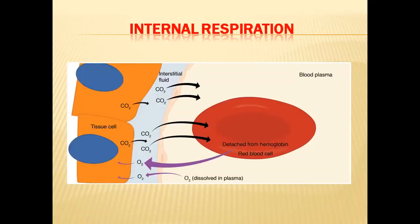In internal respiration, blood returns from the lungs full of oxygen and reaches the tissues. When it reaches the tissues, it gives oxygen to the tissues and receives carbon dioxide. By taking carbon dioxide, the blood returns back and finally reaches the lungs again. This process is called internal respiration. In internal respiration, exchange of gases occurs between blood and tissue. The present topic — oxygen transport — comes into picture in this phase, in internal respiration.